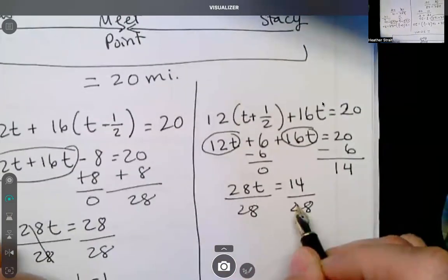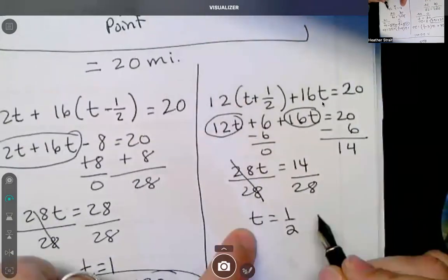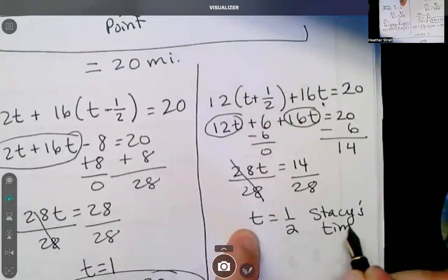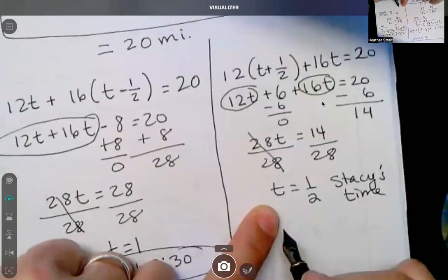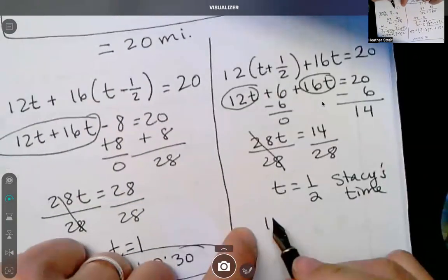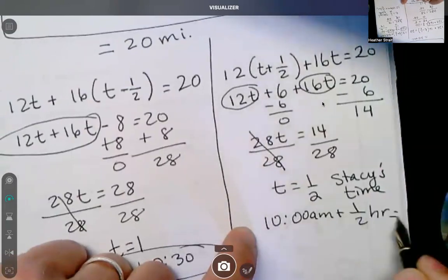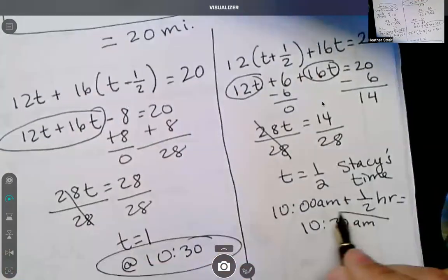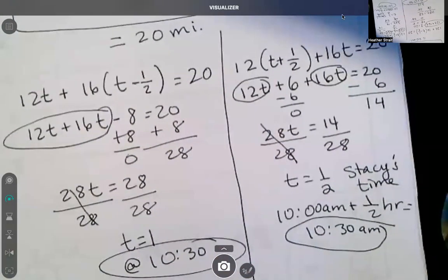Okay. How did you get two? So T equals one half, but this is Stacy's time. Oh, okay. You did the wrong way. And she left at 10 AM plus half hour equals 10:30. So no matter what you get 10:30. All right. Okay. Continue, number eight in the next video.